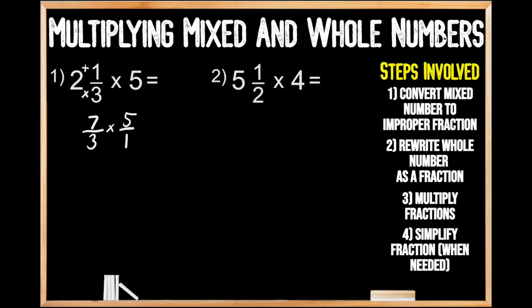Now we can move on to step number three, where we're going to multiply our fractions. First, we're going to multiply our numerators. When we multiply seven times five, we get 35. And now we're going to multiply our denominators. When we multiply three times one, we get three.